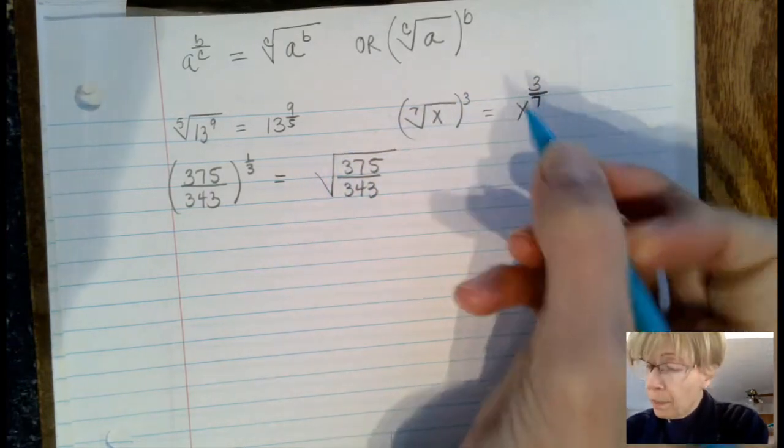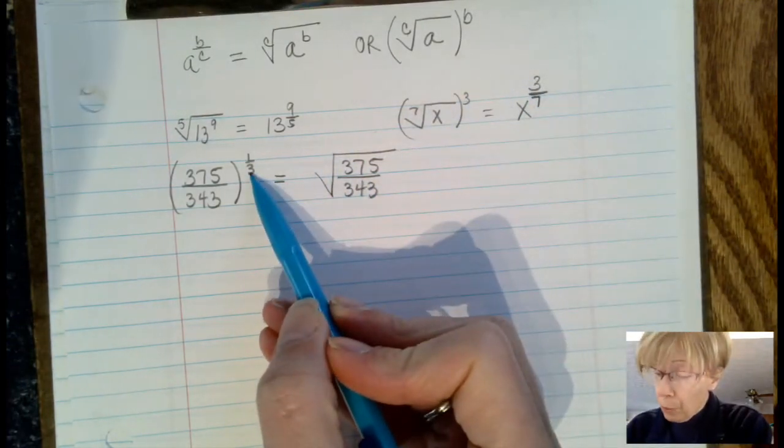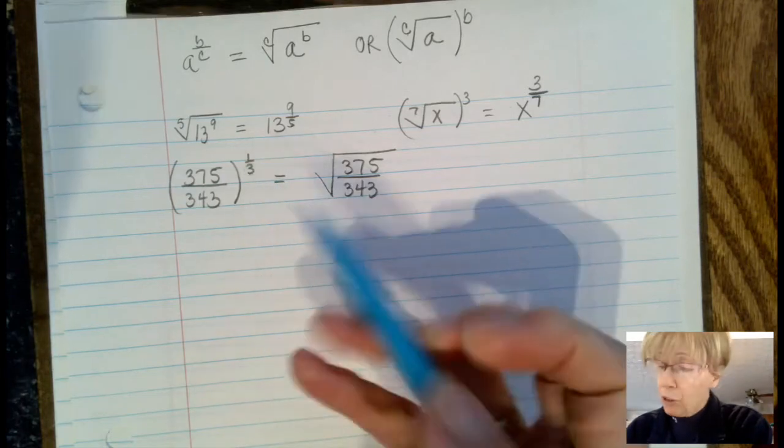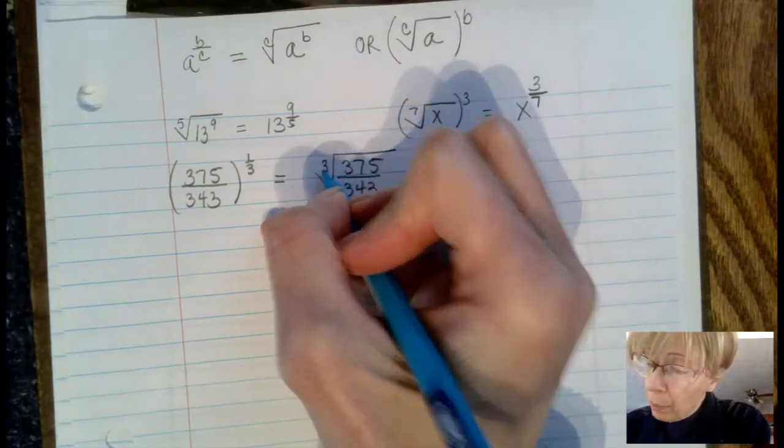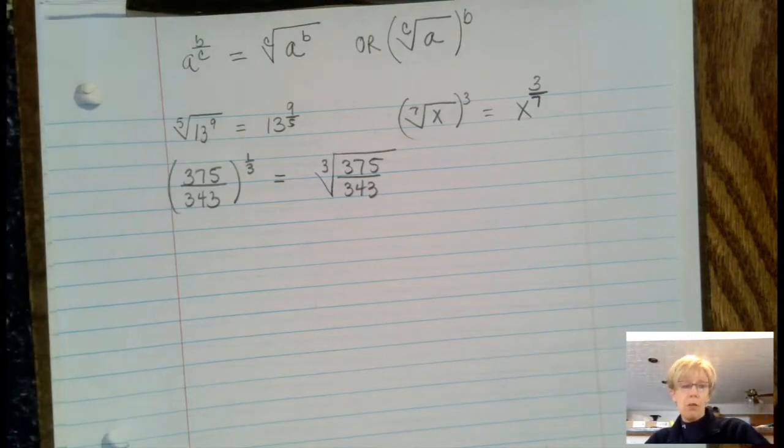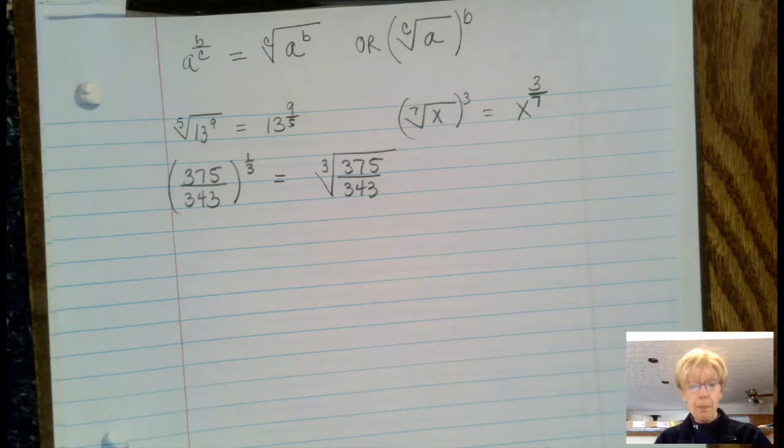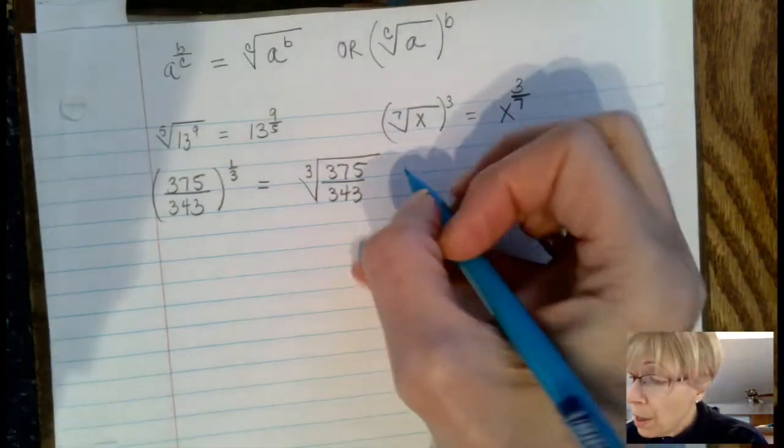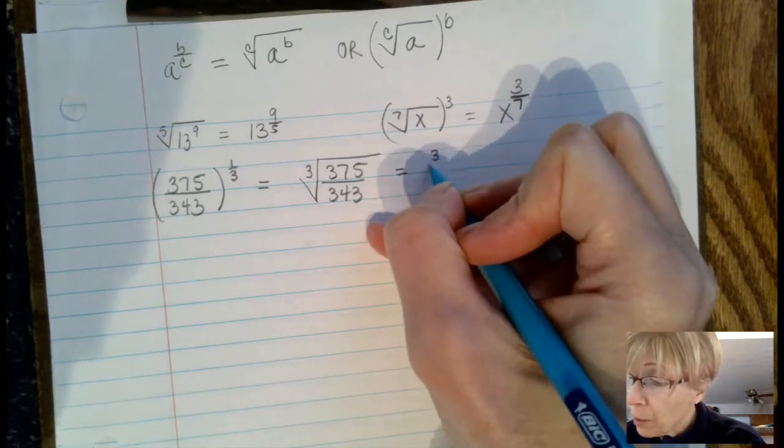I mostly say checkmark part of the radical. We could write it in that format. But this also means we could break apart the fraction. We could say this is the cube root of 375 over the cube root of 343. Now that we have those two choices, let's go back and look at the iPad.